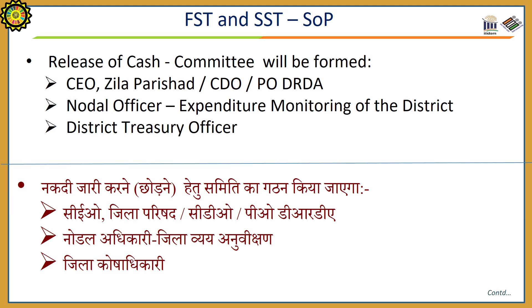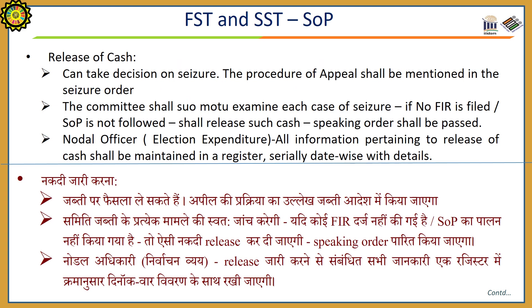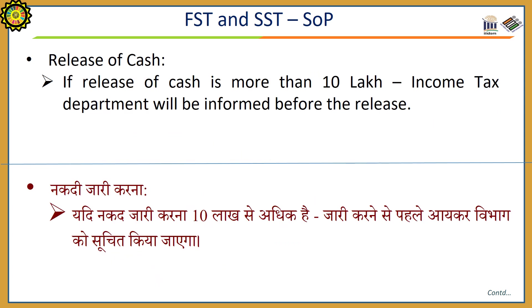Release of cash: There will be a committee under the chairmanship of the CEO, Zilla Parishad CDO, or PO DRDA. The nodal officer of the expenditure monitoring cell will be one member, and the district treasury officer will also be one member. The appellate authority can take a decision on seizure, and the procedure of appeal is mentioned in the seizure order. The committee shall examine each case of seizure. If no FIR is filed or SOP is not followed, they shall release such cash, and a speaking order shall be passed. All information pertaining to release of cash shall be maintained in a register serially, date-wise, with all details, maintained by the nodal officer of the election expenditure cell. If the release of cash is more than Rs. 10 lakh, the income tax department will be informed before the release of such cash.